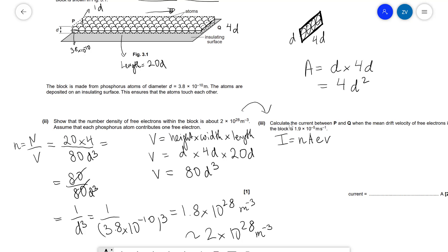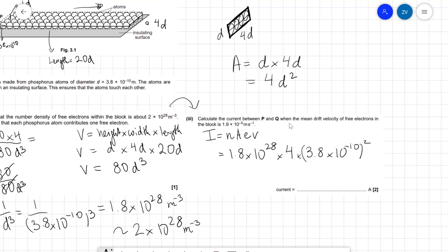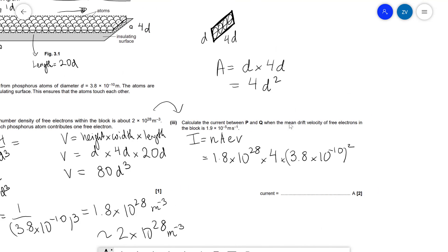Okay, well let's plug in all the values. So we know that n, the number density, is about 1.8 × 10²⁸. We know that our area is 4d², so it's going to be 4 × (3.8 × 10⁻¹⁰)². That's our diameter, so we need to square it, and we also need to multiply by e and v.